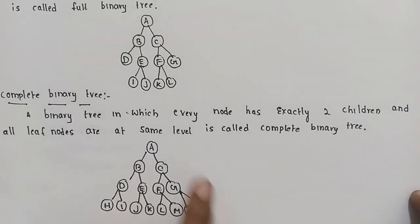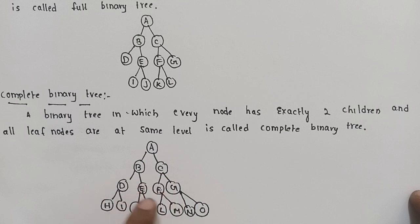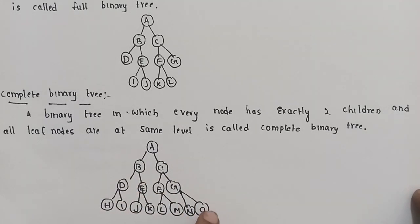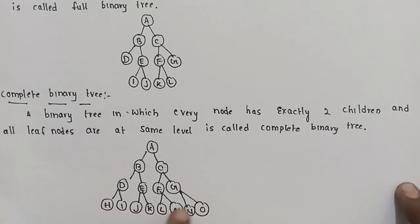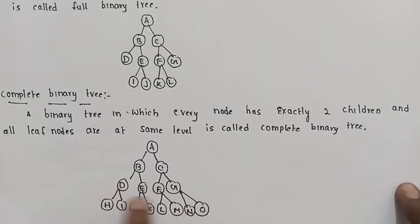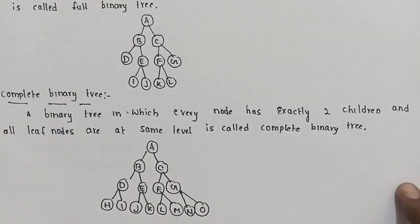For example, if you have any nodes, every node is at the same level. Every node chooses the same level, so this is a complete binary tree.